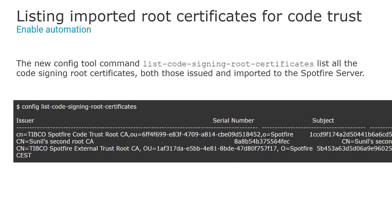We had commands for listing code signing certificates, but it was not trivial to list those root certificates that have been imported afterwards to the Spotfire server. Now with the new config tool command list code signing root certificates, you can list all those code signing root certificates — both the ones issued before and the ones imported to the Spotfire server.